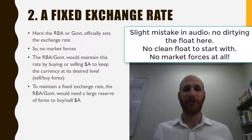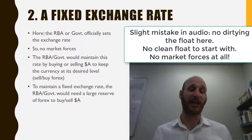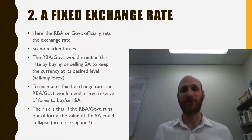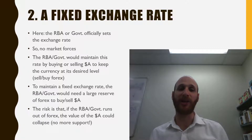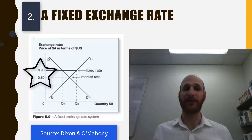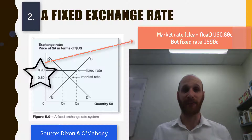To maintain a fixed exchange rate, the RBA or government would need a large reserve of foreign exchange. To keep it higher than it would normally be, they have to sell huge amounts of foreign exchange to buy the local currency and push up its value. The risk is that the RBA or government runs out of foreign exchange and has no more foreign currency to sell in order to buy the Australian dollar and push its price up. On this graph from Dixon and Marnie, the market rate is one Australian dollar buying 80 US cents, but the government or RBA prefer it at 90 cents, so they are buying Australian dollars and selling foreign currency to push it up to that higher artificial level.